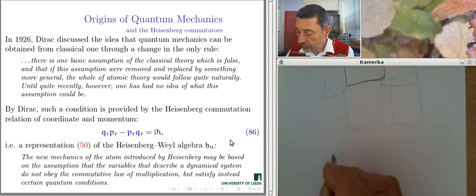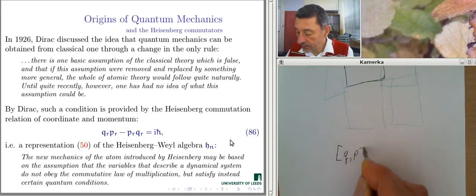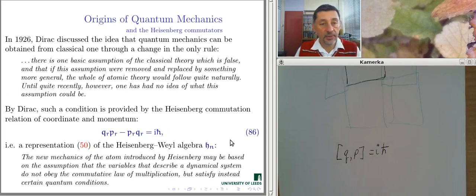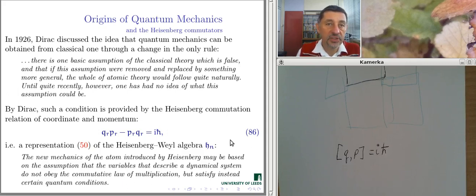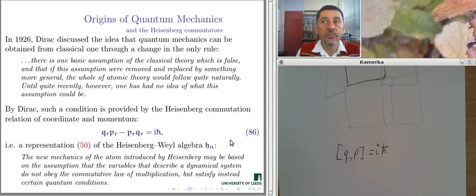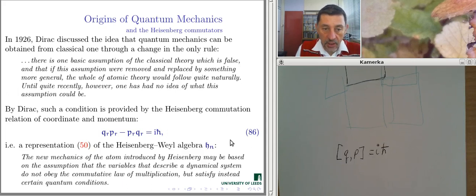In particular, Dirac held that momentum and coordinate observables shall not commute but satisfy the relation [Q, P] = i times a constant — which we now, of course, clearly recognize as the commutator relation in the Lie algebra of the Heisenberg group. Dirac was very convinced by his arguments, and many people after him are convinced, saying that this is indeed the key: we need to replace C-numbers — classical commutative numbers — by non-commutative Q-numbers, identified by mathematicians as operators. So non-commutativity is taken to be the main feature of quantum mechanics.